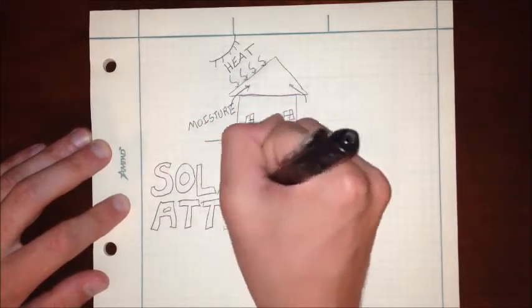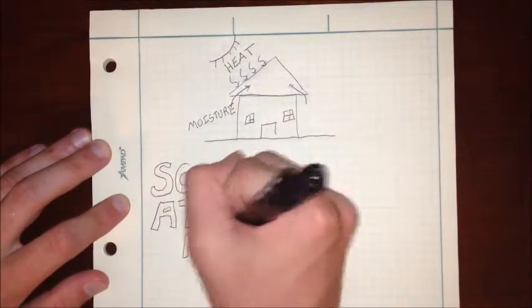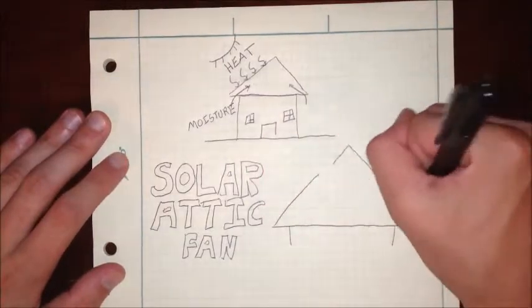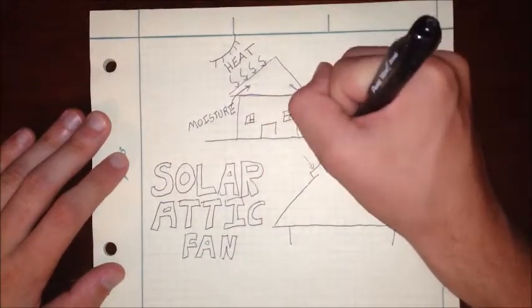The biggest contributor to heat is the sun heating up your ceiling. Installing a solar attic fan will circulate heat and moisture out of your attic space and keep the house cooler.